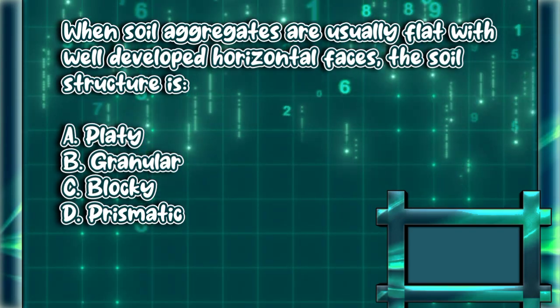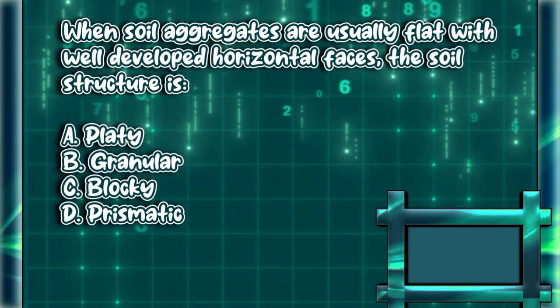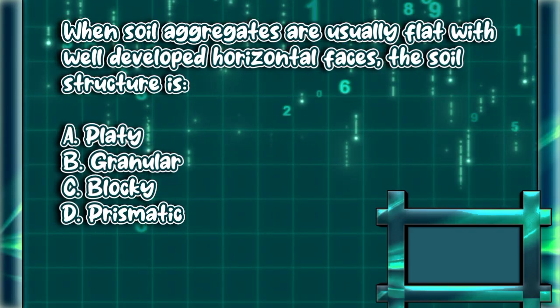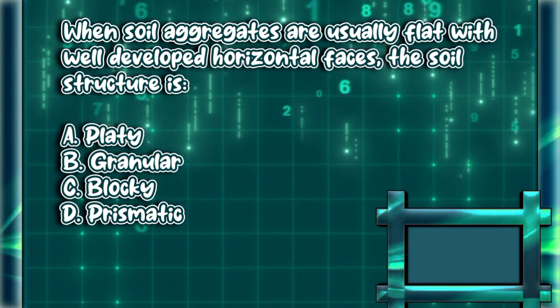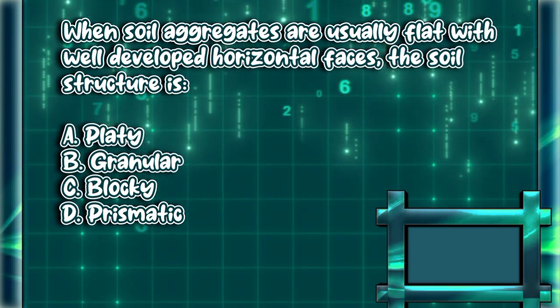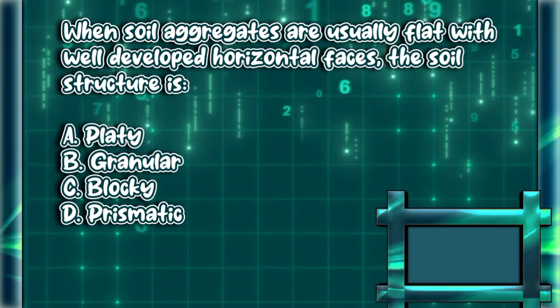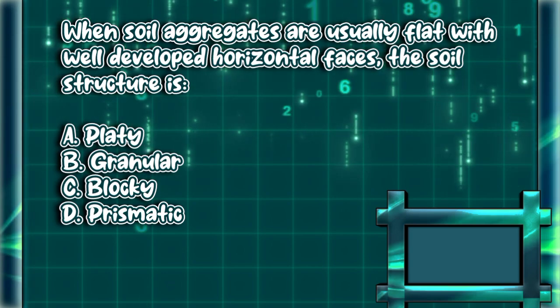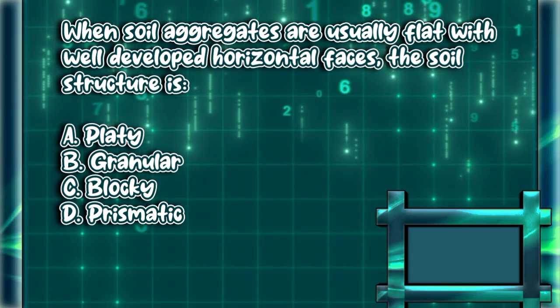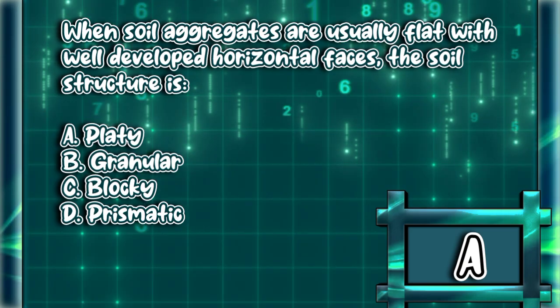When soil aggregates are usually flat with well-developed horizontal faces, the soil structure is: A. Platty. B. Granular. C. Blocky. D. Prismatic. The answer is letter A.